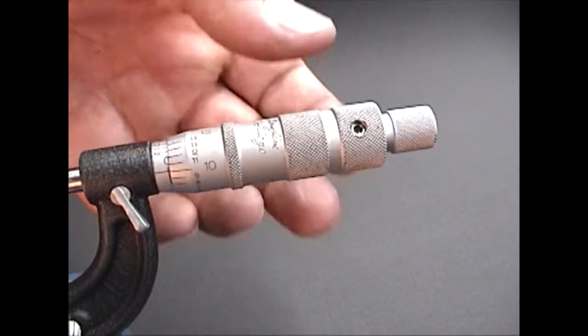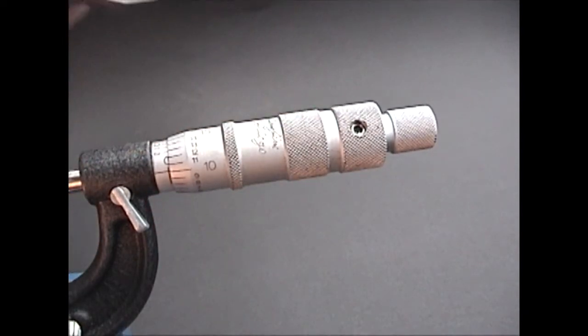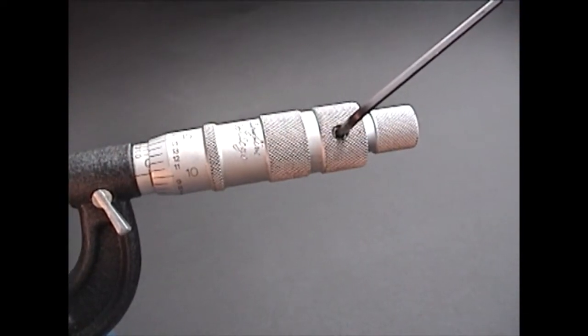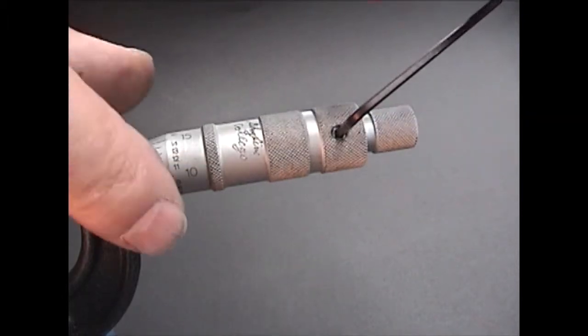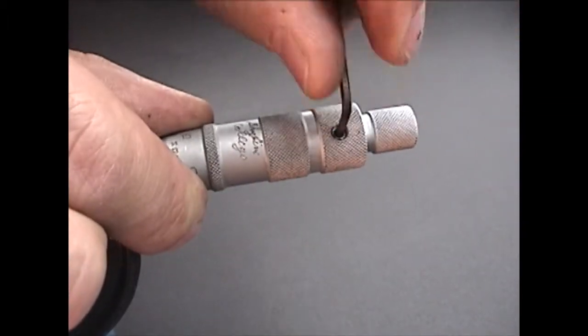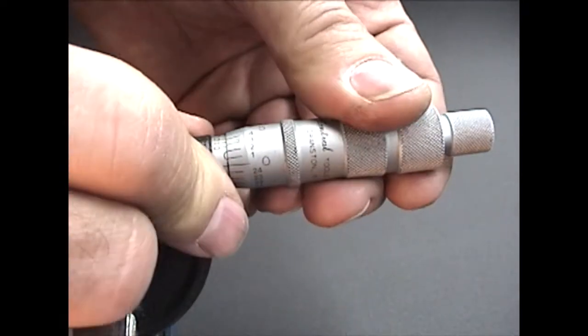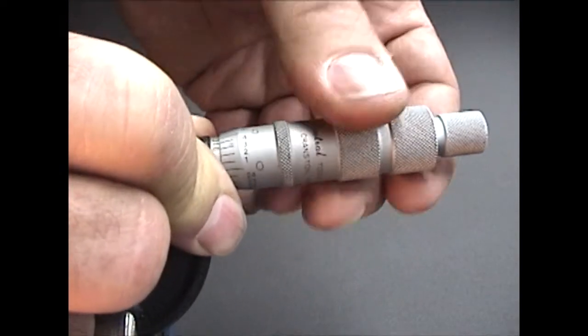If adjustment is needed, an allen set screw can be found on the thimble near the thumb ratchet. Loosen the set screw with the allen wrench. Now the thimble will move freely on the barrel.